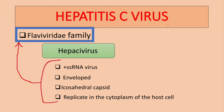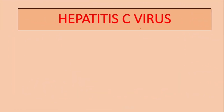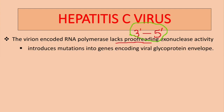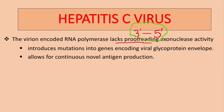Something specific about the Hepatitis C virus: the virally encoded RNA polymerase lacks proofreading exonuclease activity, particularly from 3' to 5'. This induces mutations into genes encoding viral glycoprotein envelope, and later on allows for continuous novel or new antigen production.